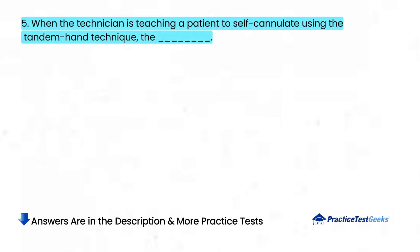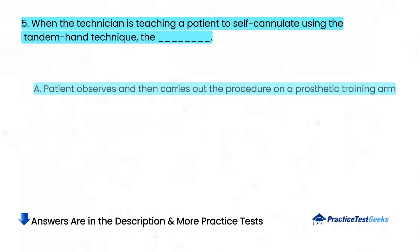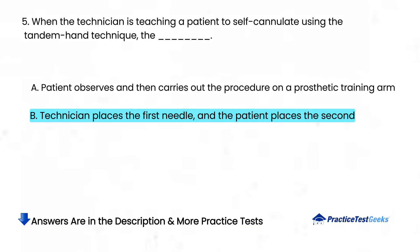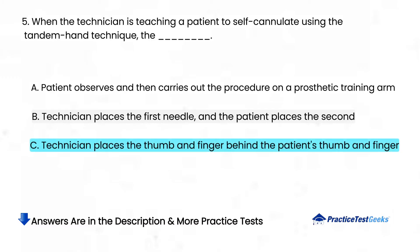When the technician is teaching a patient to self-cannulate using the tandem hand technique, the: A. Patient observes and then carries out the procedure on a prosthetic training arm. B. Technician places the first needle and the patient places the second. C. Technician places the thumb and finger behind the patient's thumb and finger.